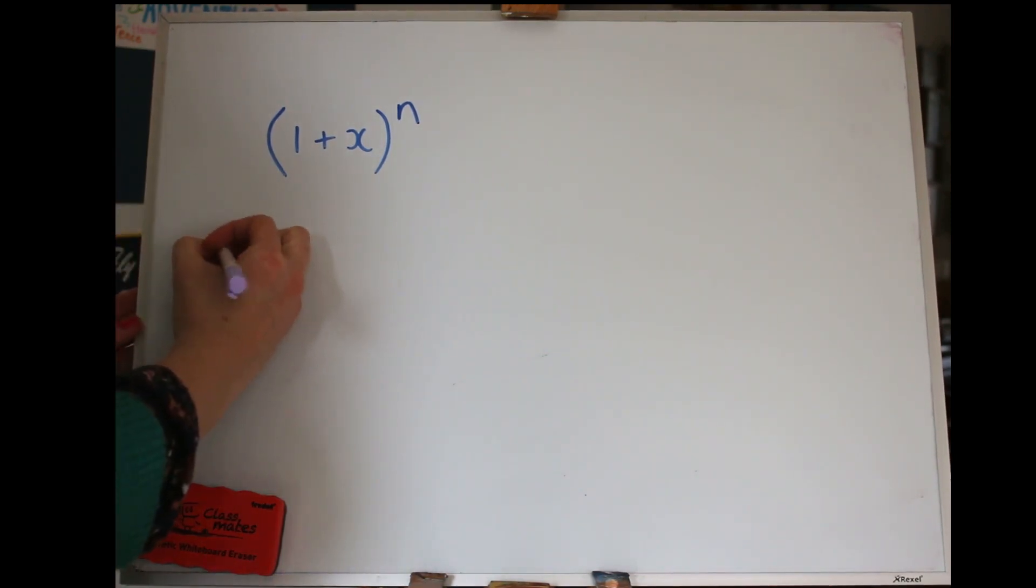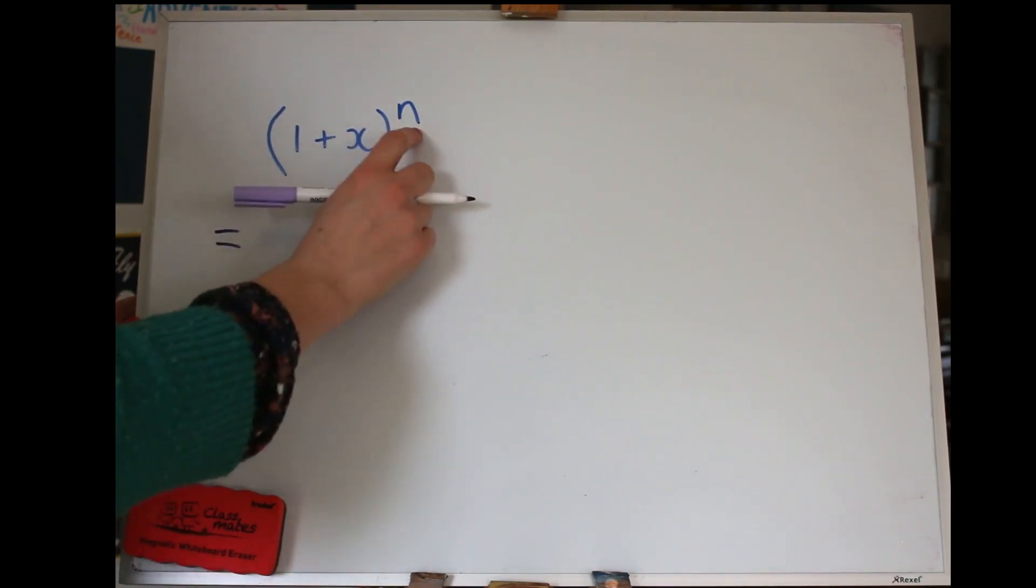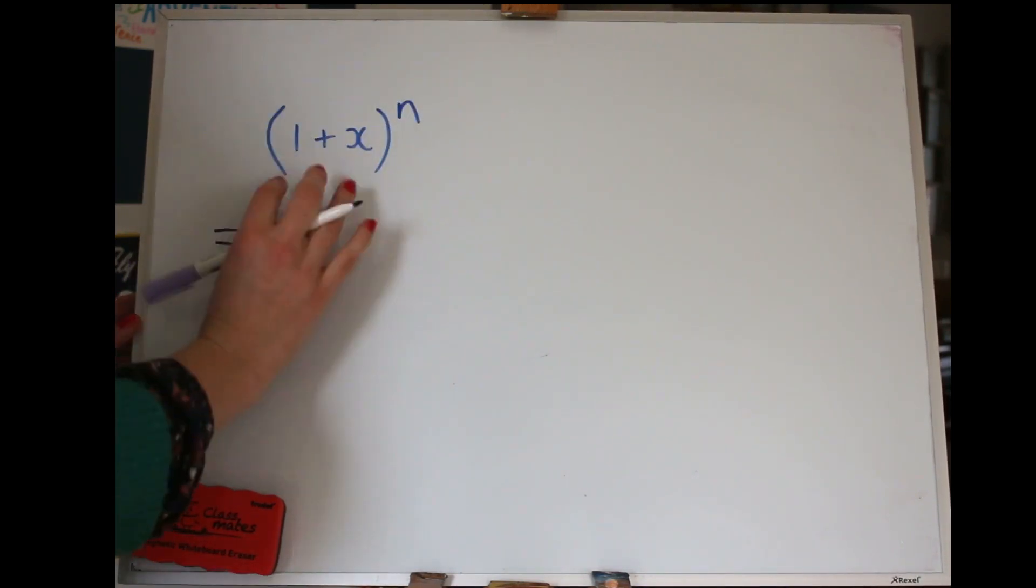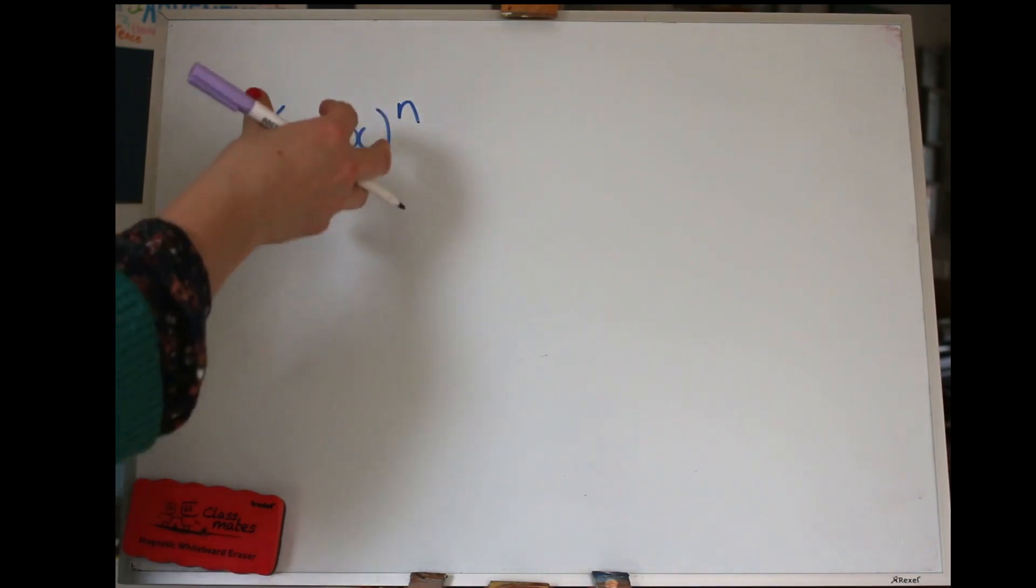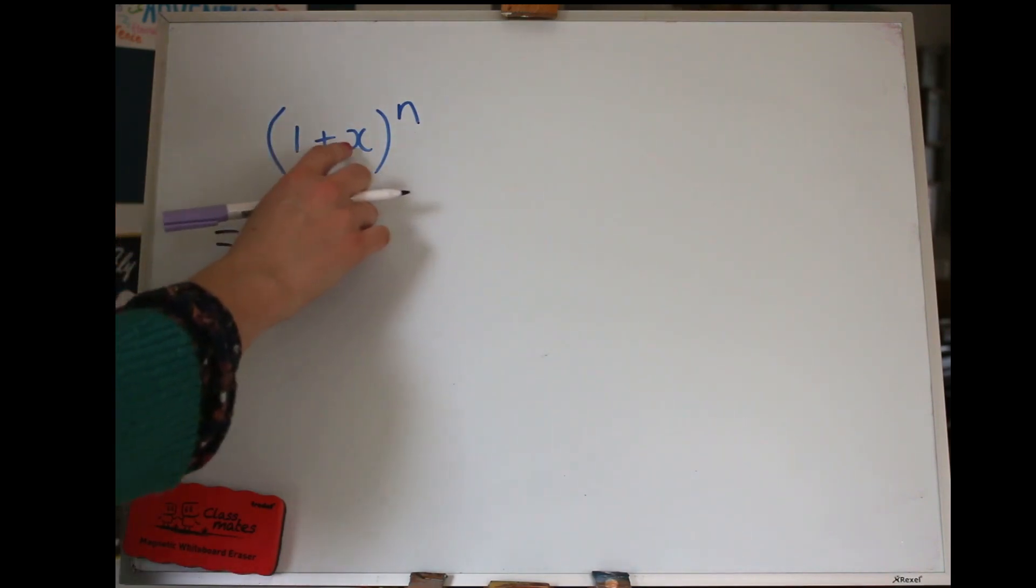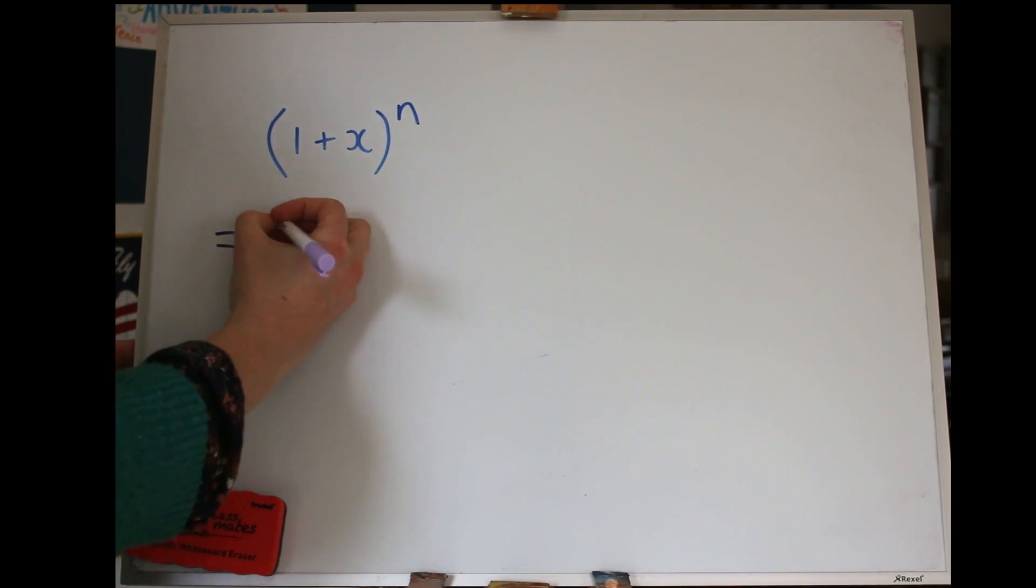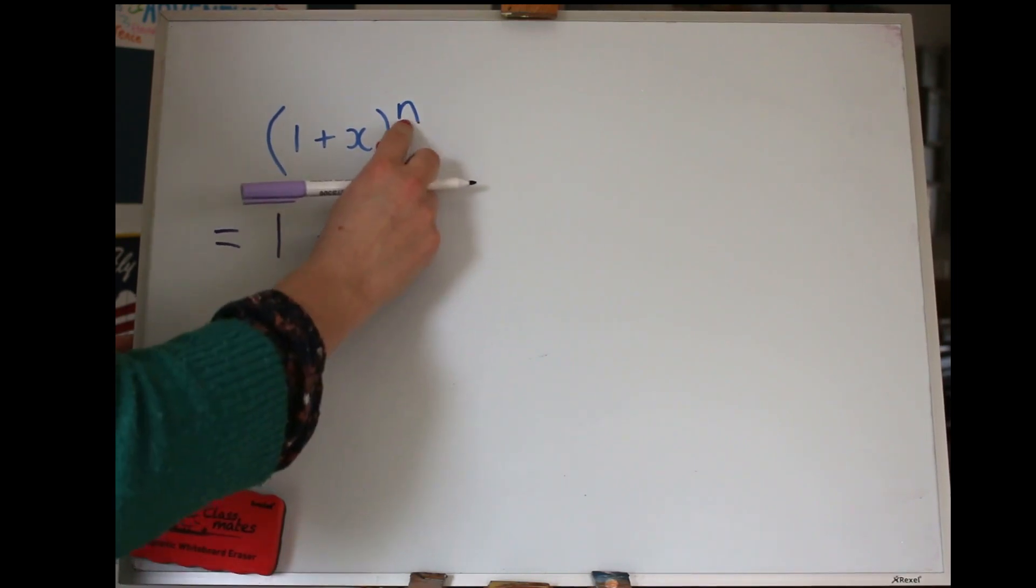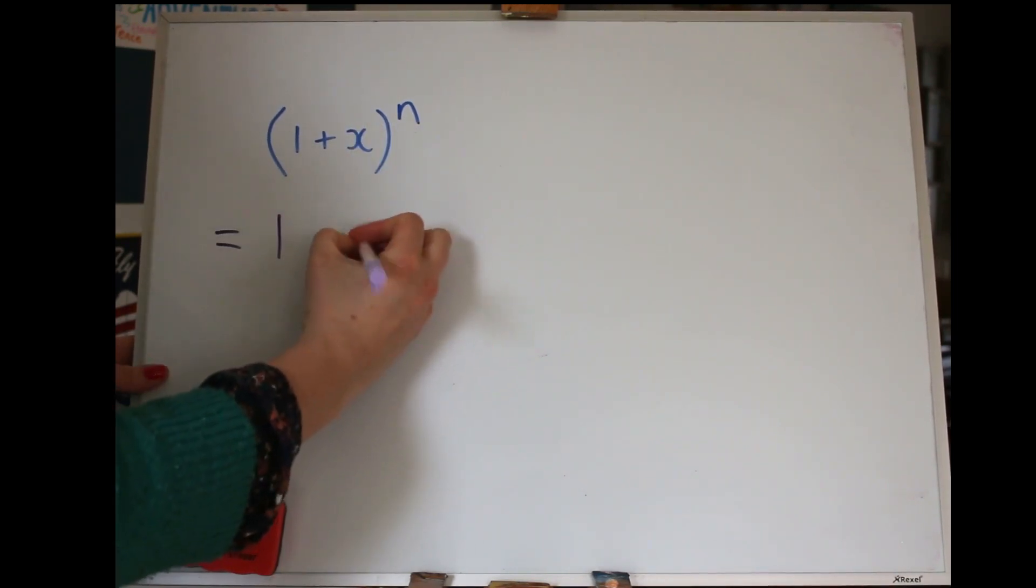So when you've got one plus something to a power, it has to be in this form, it has to be one plus, so if it isn't one you have to manipulate it so that it is one, and we'll look at doing that, and then plus anything to a power. So here we go, the formula, the first term is one, which is nice and easy, and the second term is the power times that thing there, so NX.